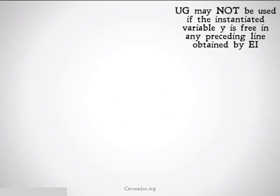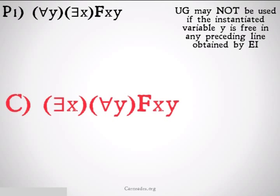Now we're going to take a look at why we don't want to use universal generalization in cases like this. UG may not be used if the instantiated variable Y is free in any preceding line obtained by EI. Consider: 'for all Y there exists an X such that X bears relation F to Y' versus 'there exists an X such that for all Y, X bears relation F to Y.' Note that all we've done is switch the quantifiers — we've already seen why these are going to be really different things. One way you could end up at this invalid conclusion is by using universal generalization improperly.